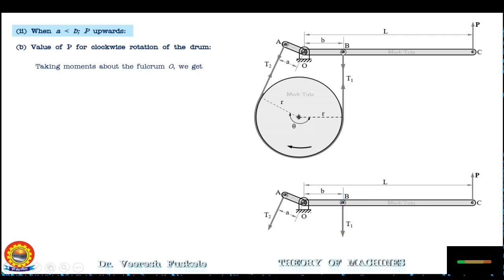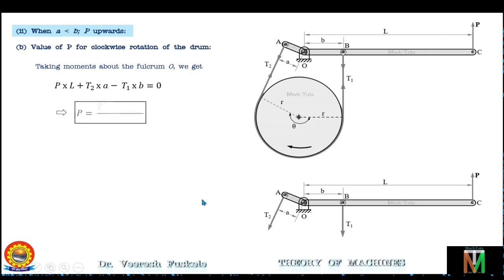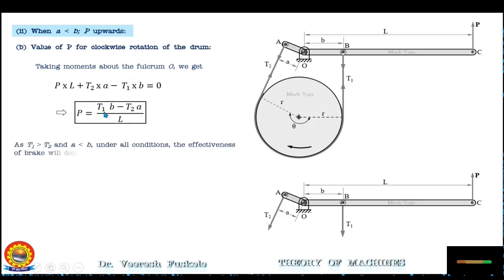Writing the moment equation: P·l + t2·a − t1·b = 0, where P and t2 have positive moments and t1 has a negative moment. From this, P = (t1·b − t2·a) / l. Since t1 > t2 and b > a (i.e., a < b), under all conditions P will always be positive, meaning the brake effectiveness always depends on the applied force P.